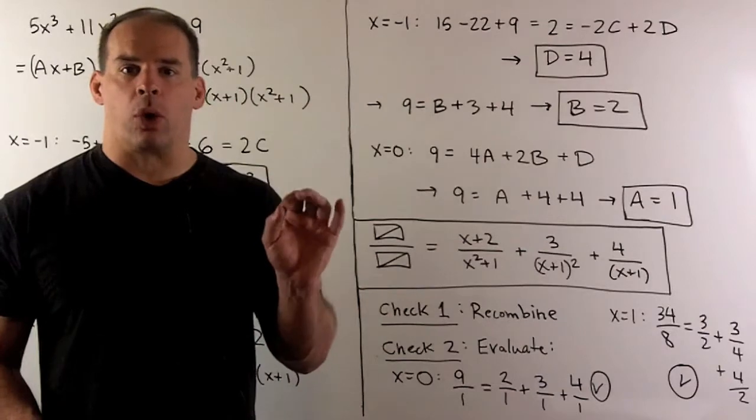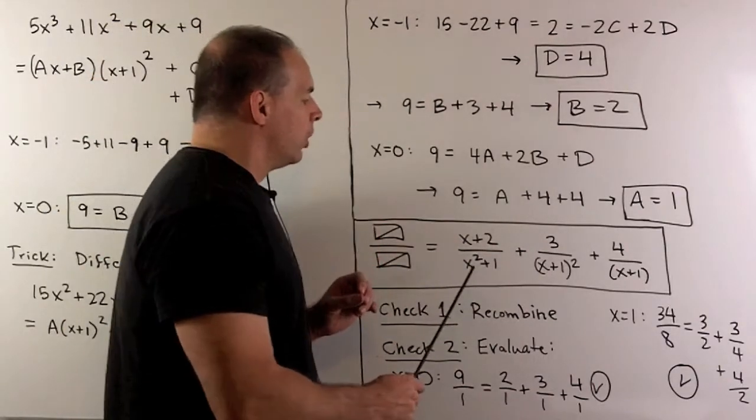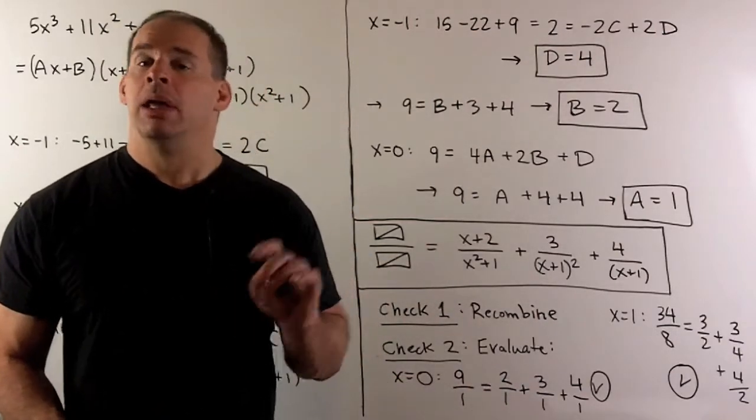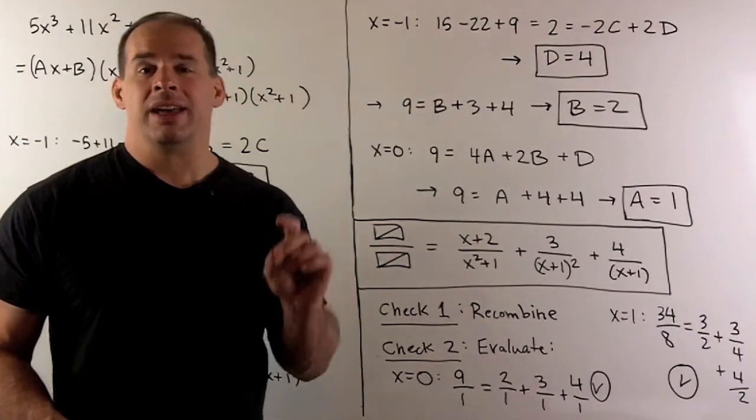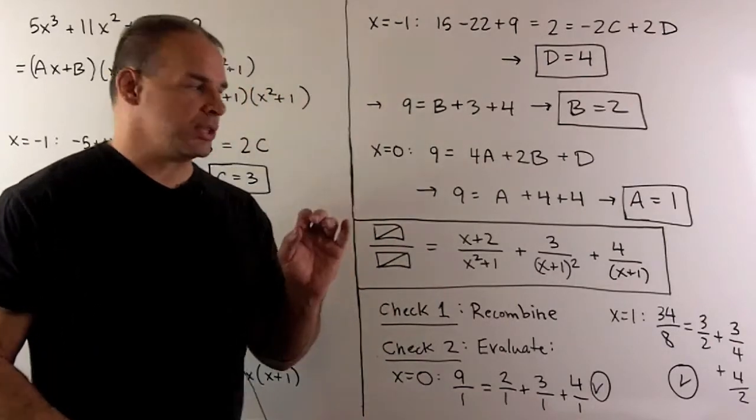Of course, we want to check our work before we integrate. Two options: one, you could just recombine everything, put it over a common denominator, make sure you get back your original rational function. If time is an issue, just evaluate your function at a few points.